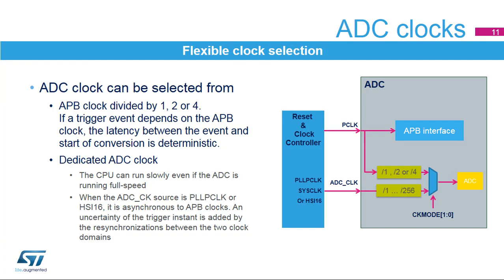The ADC has a selectable clock source. When the system needs to run synchronously, the APB clock source is the best selection. If a slow CPU speed is required but the ADC needs a higher sampling rate, the dedicated ADC clock can be selected. In this case the ADC implements two clock domains — PClock and ADC clock — and delays are needed to perform resynchronisation between them.